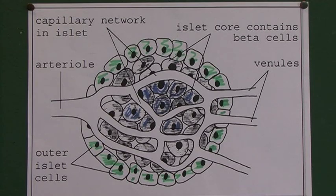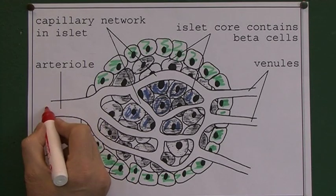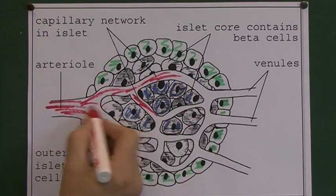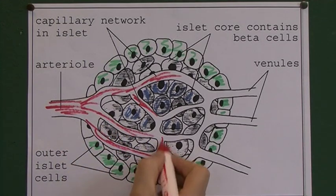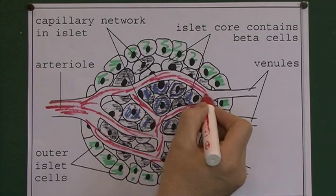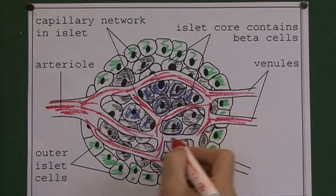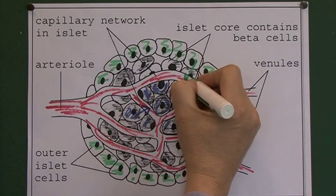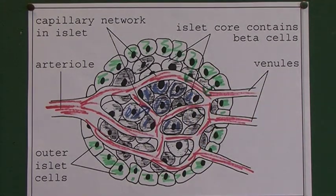Here we have an arterial taking blood into the islet. This blood is going to circulate round capillaries in the islet because, remember, it's endocrine. An endocrine gland is one which will release its product directly into the bloodstream. So as the insulin is formed, it can pass straight into the bloodstream. As the glucagon is formed, it can pass straight into the bloodstream as well, so they can regulate the amount of glucose in the blood by their combined actions.